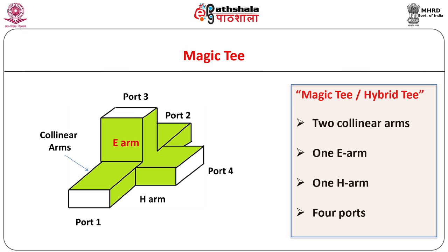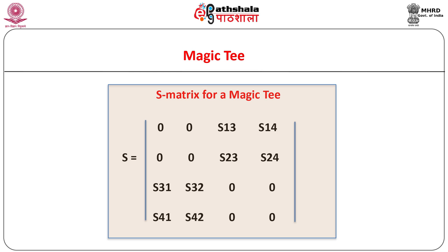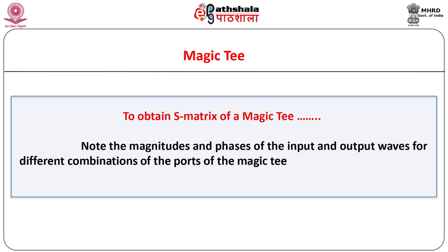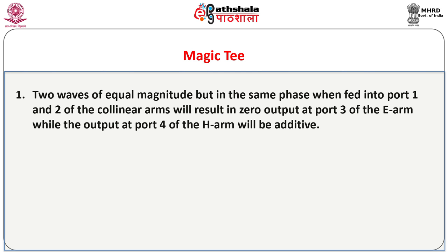E-plane and H-plane T have their own advantages and applications. The combination of the two is known as magic T, also known as hybrid T, and it has many interesting features. It has two collinear arms, one E arm and one H arm, totalling four arms and hence four ports. The S matrix for a magic T is as shown. This S matrix can be obtained by noting many characteristics of the T. We have to note the magnitudes and phases of the input and output waves for different combinations of the ports of the magic T. Two waves of equal magnitude but in the same phase when fed into port 1 and port 2 of the collinear arms will result in zero output at port 3 of the E arm while the output at port 4 of the H arm will be additive.